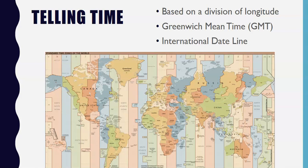Greenwich Mean Time, or GMT, is located at the prime meridian, which is zero degrees longitude. The prime meridian passes through the Royal Observatory in Greenwich, England. Greenwich Mean Time is the master reference time for all points on earth.